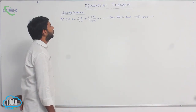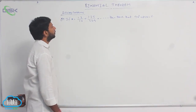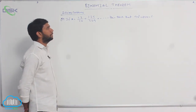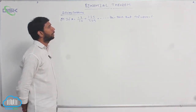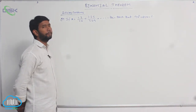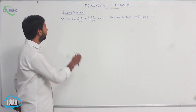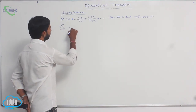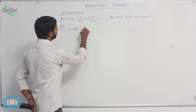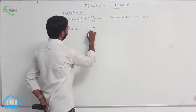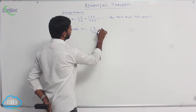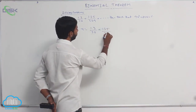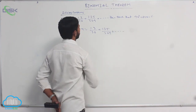Next example. If x is equal to (1·3)/(3·6) + (1·3·5)/(3·6·9) + and so on, then prove that 9x² + 24x is equal to 11.